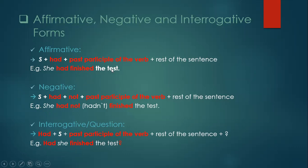When I want to make it negative, I add 'not' between 'had' and the past participle. So I say: I had not finished, or she had not finished the test before the time ended — which can also be written as 'hadn't'. For the interrogative (question form), I start with 'had', then switch to: had + subject + past participle + rest of sentence. There is no 'not' in the question. So I say: had she finished the test? Remember to put a question mark at the end.